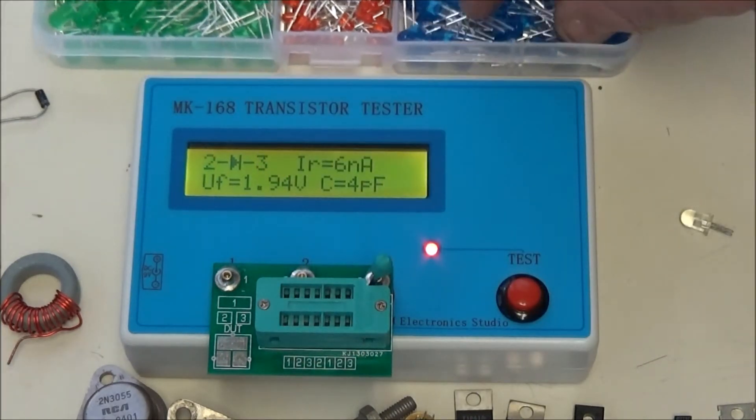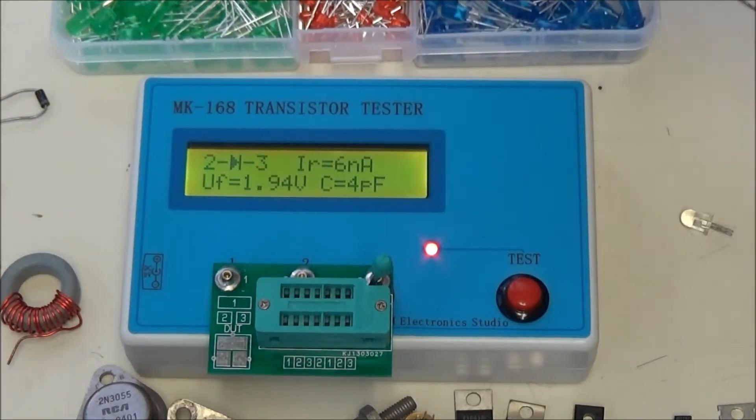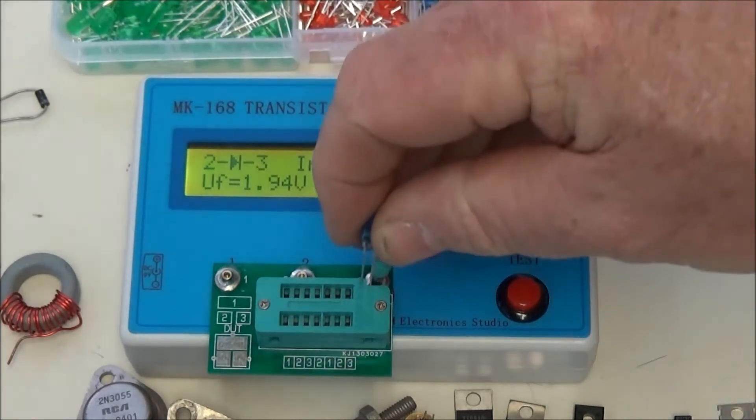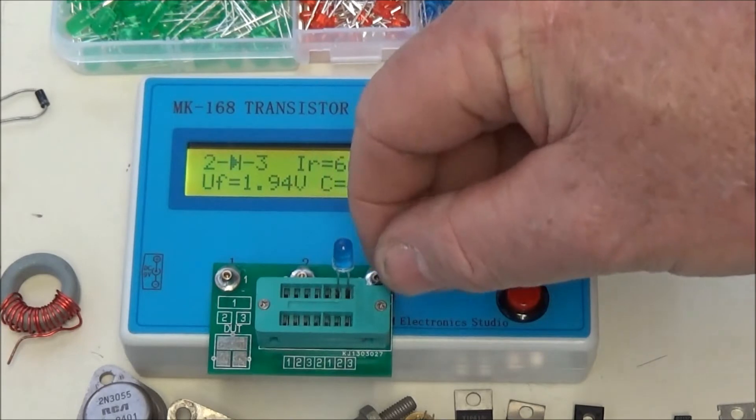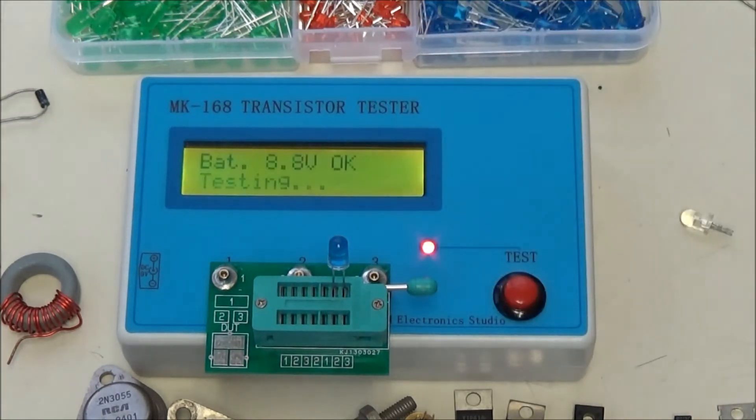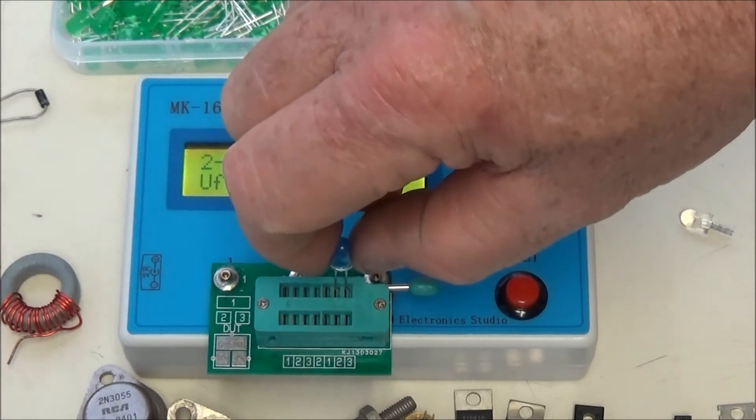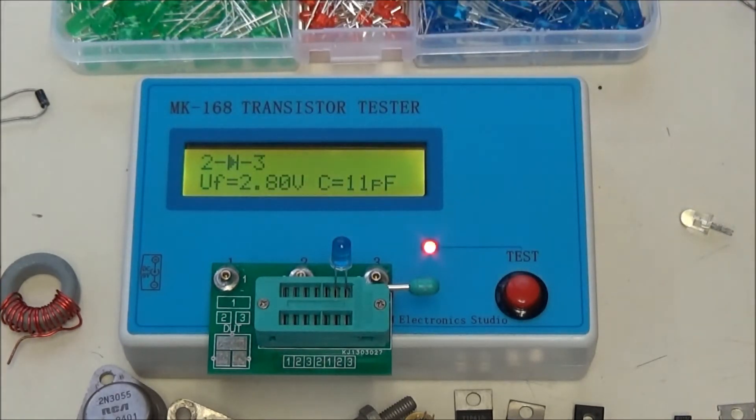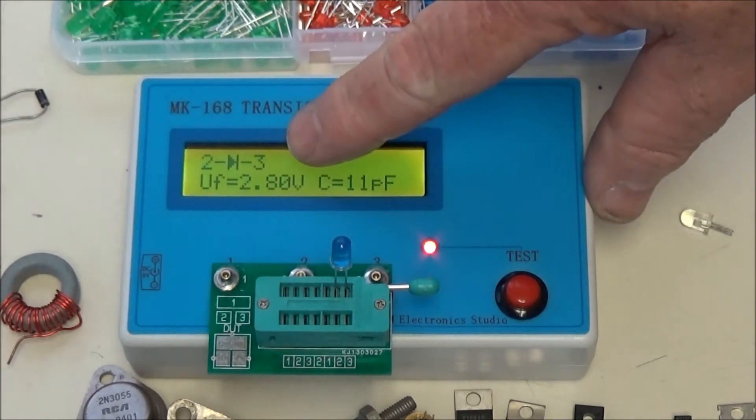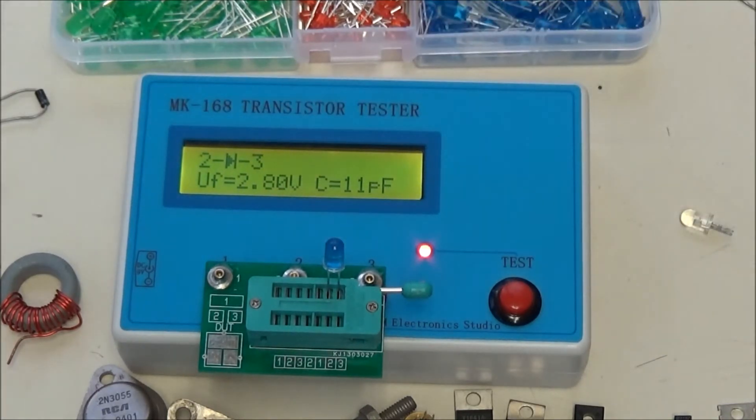Let's test another LED. You note that one has 1.94. What's the forward voltage drop on a blue LED? Again, it identified my anode and cathode, the cathode being on 3 on this side. And that's the flat side. That is correct. But your operating voltage is 2.8 volts.